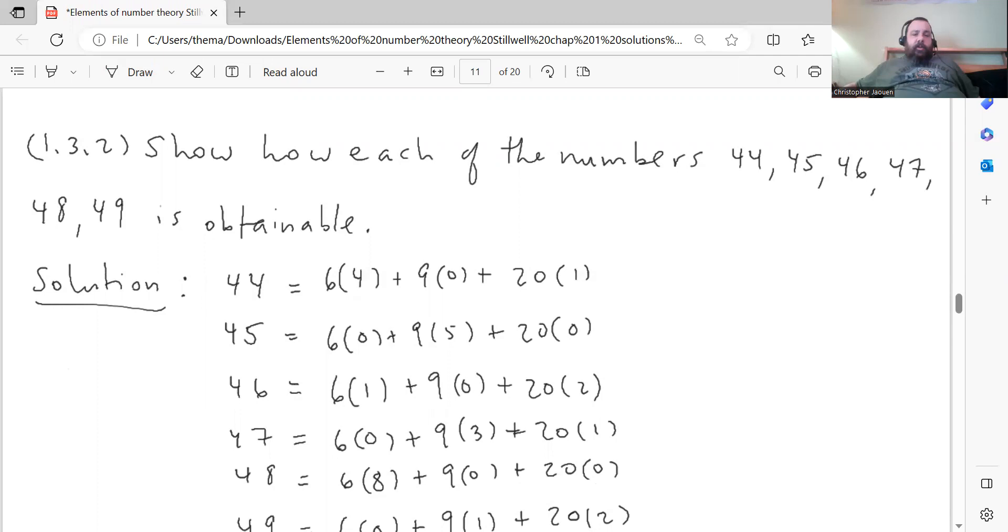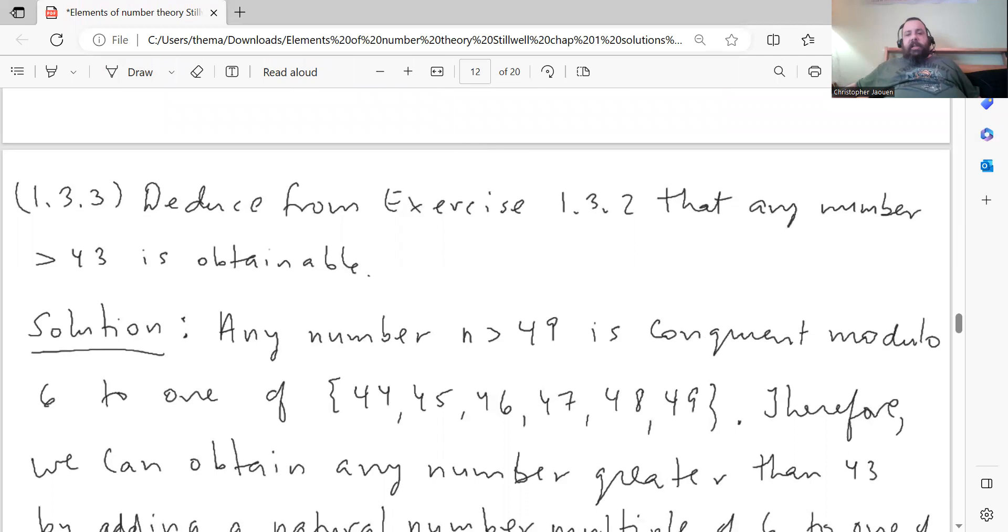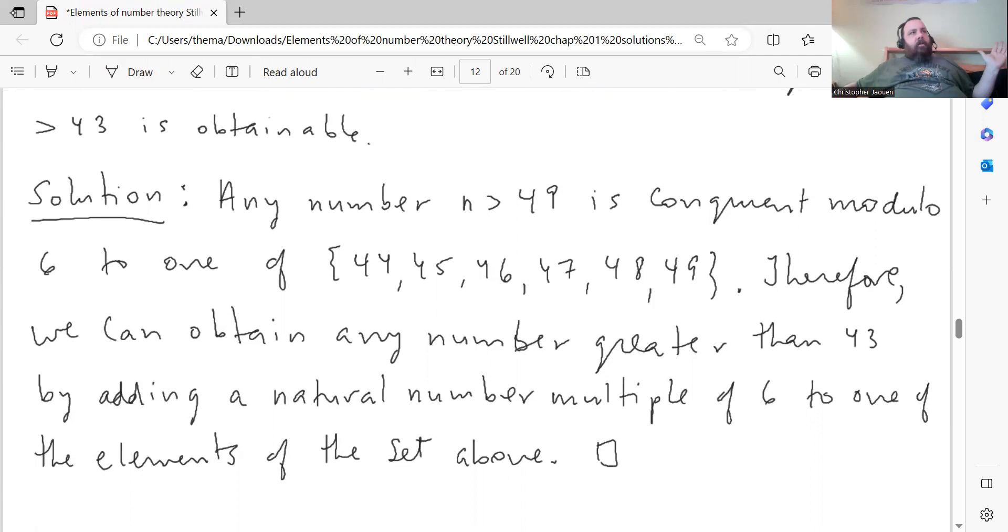Next question: Show that each of the numbers 44, 45, 46, 47, 48, 49 is obtainable. You just find the numbers that work. I've represented all of those numbers as a sum of that form. Question 1.3.3: deduce from exercise 1.3.2 that any number greater than 43 is obtainable. This is a similar argument to what we did in the chapter for that problem. Any number n greater than 49 is congruent modulo 6 to one of those numbers. Therefore, we can obtain any number greater than 43 by adding a natural number multiple of 6 to one of the elements in the sets above. So that shows you can write any number greater than 49 in that form.